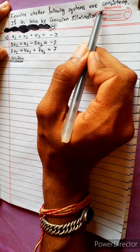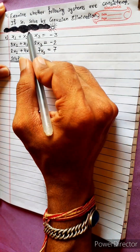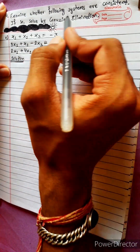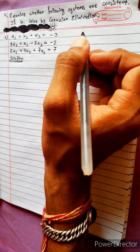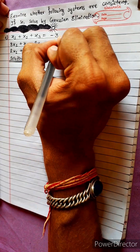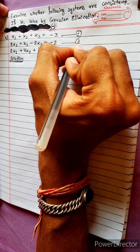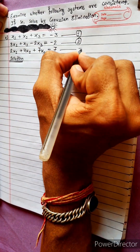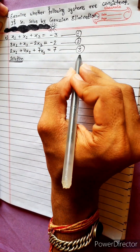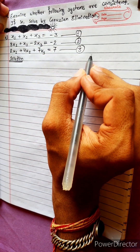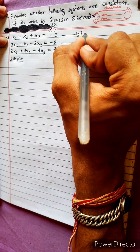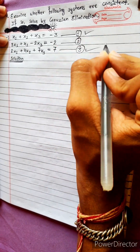Examine whether the following systems are consistent or not. If so, solve by Gaussian elimination method. We have equation 1, equation 2, and equation 3.